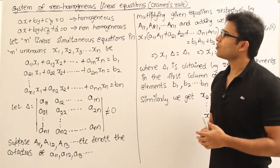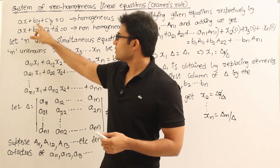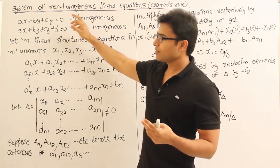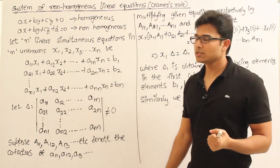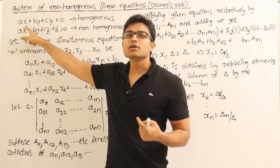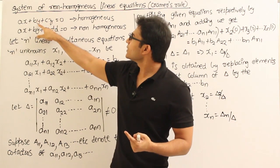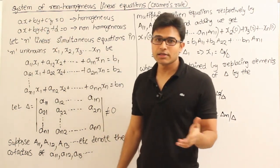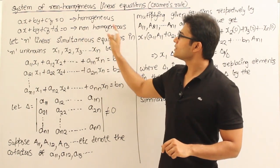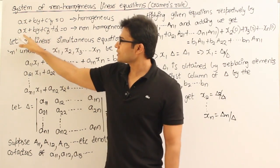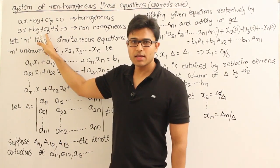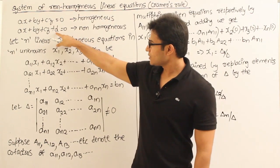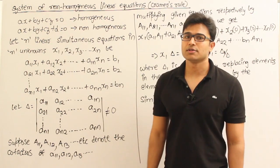What do I mean by homogeneous and non-homogeneous equations? Whenever you have something like ax + by + cz = 0, where x, y, z are variables and a, b, c are constants, the degree of each term is 1. That is why it is called linear and homogeneous — homogeneous means all terms have the same degree. A non-homogeneous equation is one where there is an additional constant term (degree 0), so not all terms share the same degree.